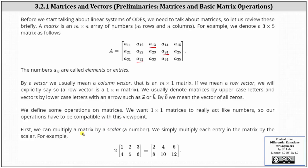First, we will multiply a matrix by a scalar or number. We simply multiply each entry in the matrix by the scalar. For example, here we have two times a two by three matrix. To perform the scalar multiplication, we simply multiply two by each element in the matrix. Notice two times one is two, two times two is four, two times three is six, and so on.